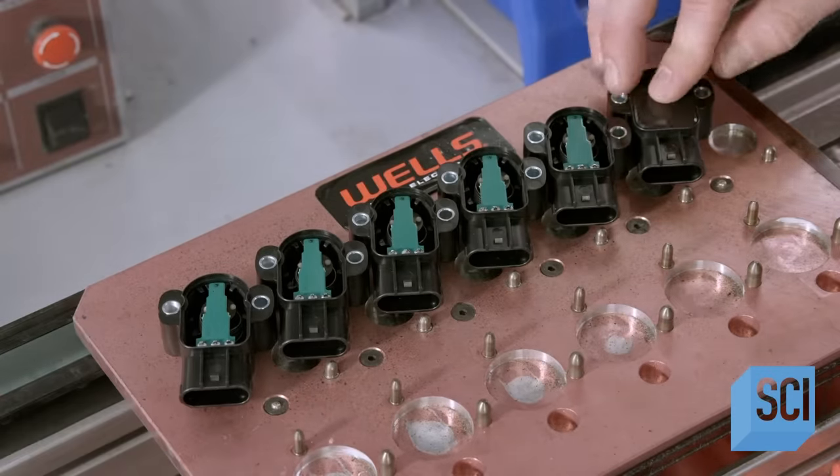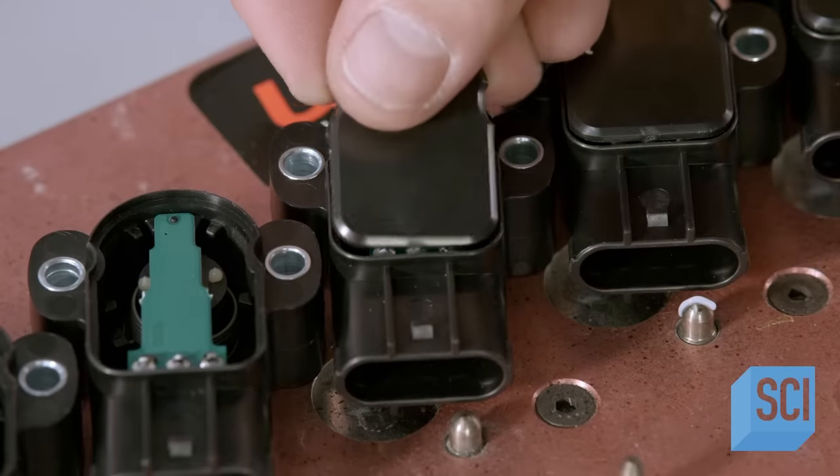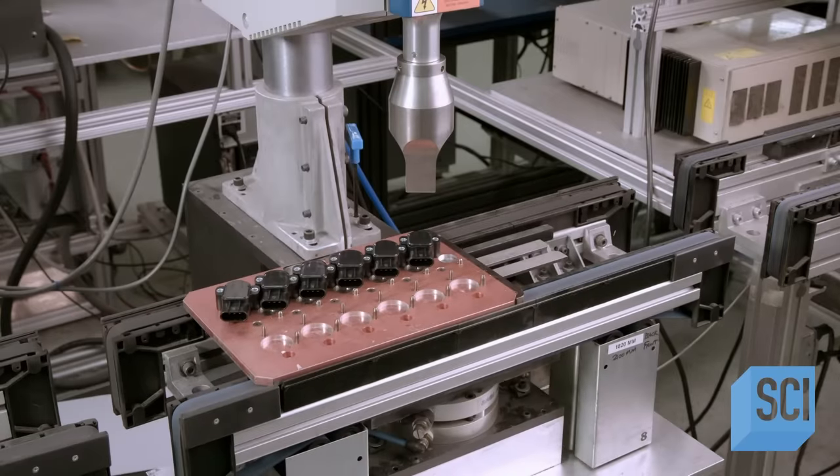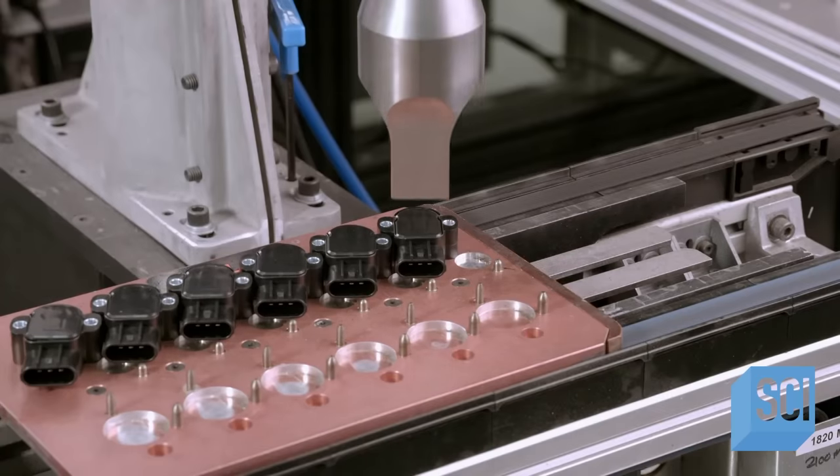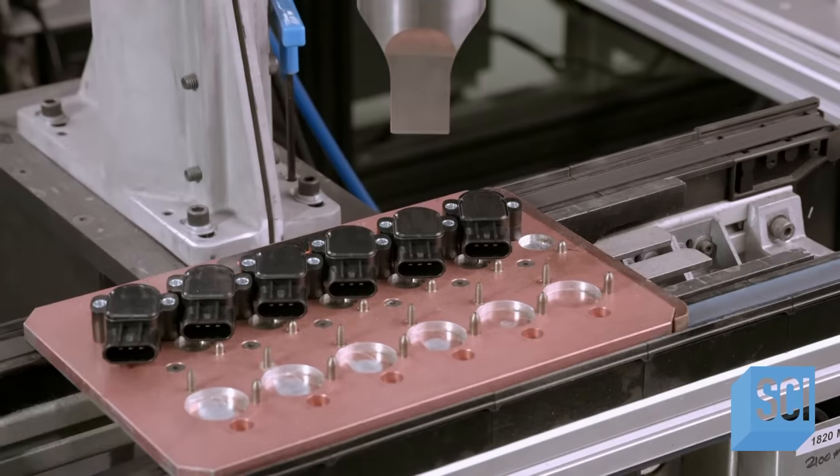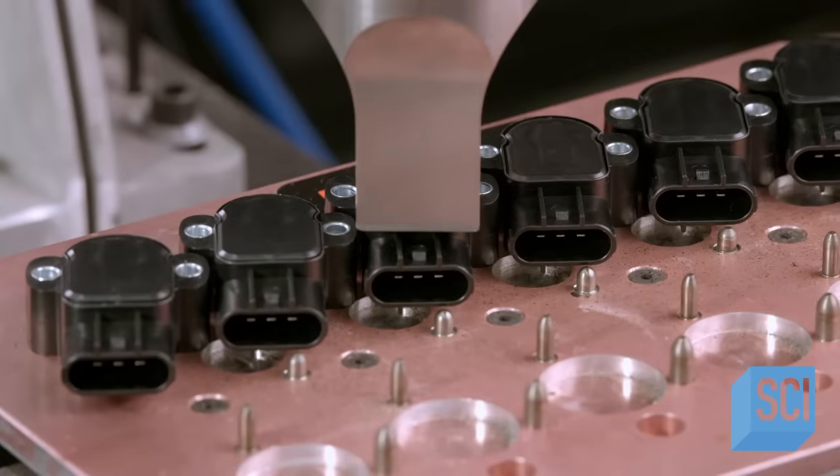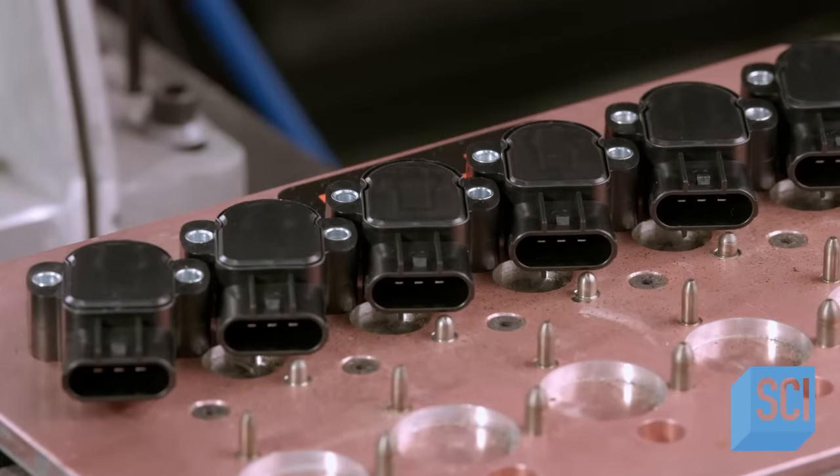A worker places covers over the sensor board compartments. An ultrasonic welder then melts the plastic at the interfaces. Once it hardens, the weld bonds the cover to the sensor body.